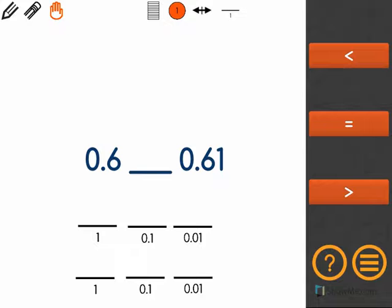Now that I have these out I'm going to fill in my two numbers into their correct places beneath. So 0.6 has a 0 in the ones place and a 6 in the tenths place, and 0.61 has a 0 in the ones, a 6 in the tenths, and a 1 in the hundredths.